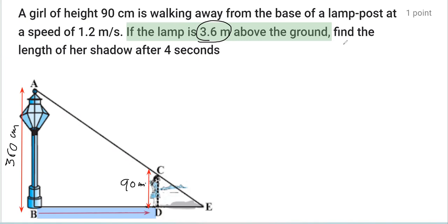Now we have to find the length of her shadow after 4 seconds. After 4 seconds, her new position is D, and the shadow is formed opposite to the source of light, so the shadow must be on this side.